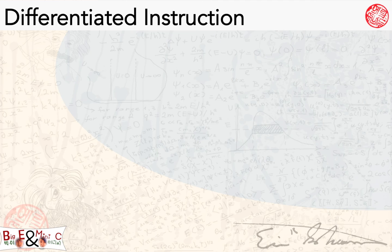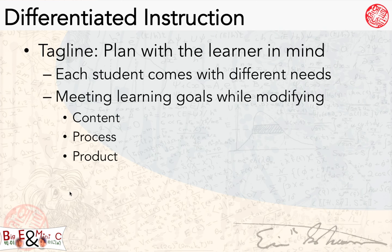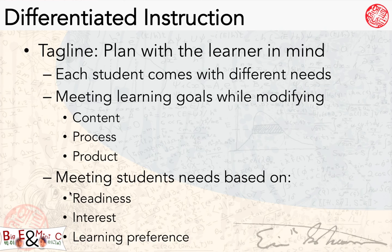The second framework is Differentiated Instruction. The tagline may be 'Plan with the Learner in Mind.' Each student comes to our classroom with different sets of needs — we see it every day. Differentiated Instruction allows us to meet the learning goals and needs of different learners by modifying the content, the process, and the product. Meeting students' needs is based on their readiness, their interest, and their learning preference. Readiness is often thought of as content level, interest as motivation, and learning preference as learning style.